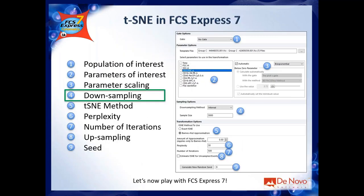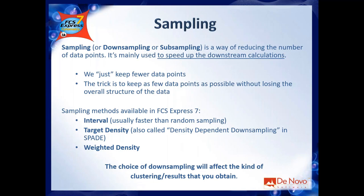The next point is downsampling, which is very crucial for tSNE. Downsampling means keeping fewer events from the entire dataset. The reason is that high-dimensional analysis algorithms are slow, so you want to speed up calculation. If you have one million cells you don't want to wait 30 minutes — you want results in one minute. So instead of running tSNE on one million events, you run it on, say, 100,000.